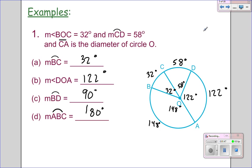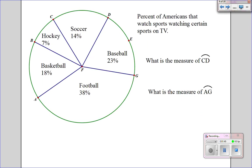So that's a bit of a review of what we did yesterday in class. Alright, so here we have a pie chart that shows me the percent of Americans that watch sports on TV watching certain sports. So which sports are they watching at what percent? We have football at 38%, basketball, hockey, soccer, and baseball.